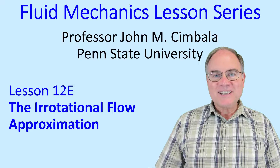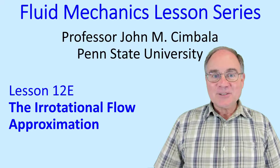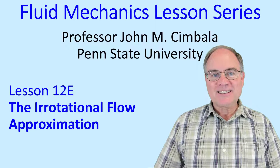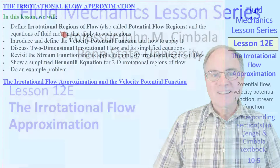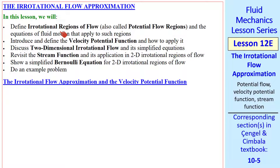Welcome to lesson 12e, the Irrotational Flow Approximation. In this lesson we define irrotational regions of flow, introduce the velocity potential function, simplify it to 2D flow, revisit the stream function, and apply it to irrotational flow. We'll show a simplified Bernoulli equation for 2D irrotational regions of flow, and we'll do an example problem.